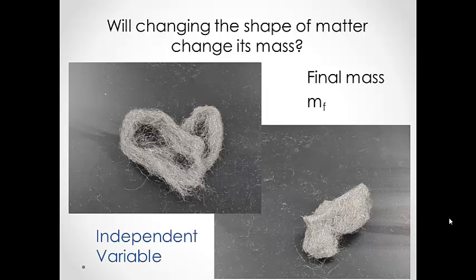Along those same lines, you are actually changing the shape of the steel wool. Because you are changing that shape, this is the independent variable.